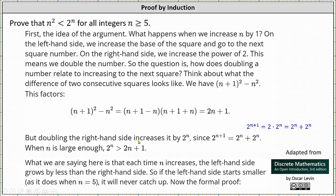But doubling the right side increases it by 2 to the power of n, since 2 to the power of n plus 1 equals 2 to the power of n plus 2 to the power of n — because 2 to the power of n plus 1 equals 2 times 2 to the power of n, which we can write as 2 to the power of n plus 2 to the power of n. When n is large enough, 2 to the power of n is greater than 2n plus 1. What we are saying here is that each time n increases, the left-hand side grows by less than the right-hand side.